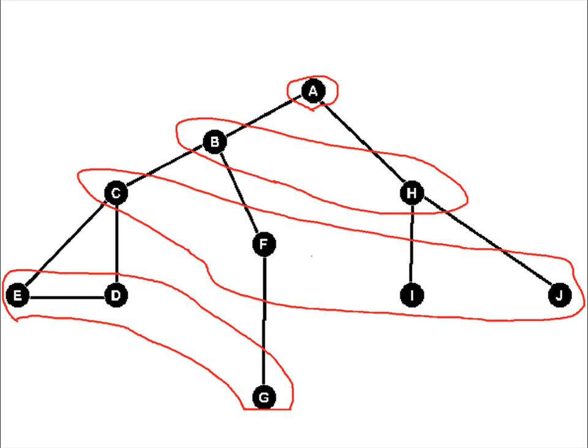Here we've circled the vertices based on their distance from the start. A is obviously zero edges away from the start since A is the start. B and H are one edge away. C, F, I, and J are two edges away. And E, D, and G are three edges away. All the vertices within one of these groups must be visited before visiting any vertex in the next group. But within each group, the order is not set.